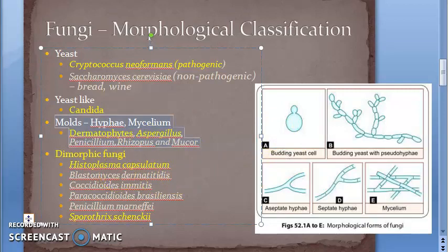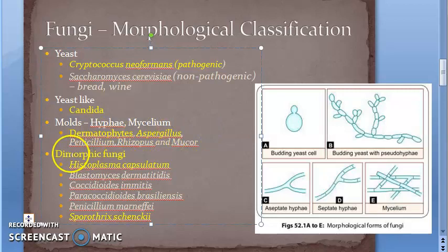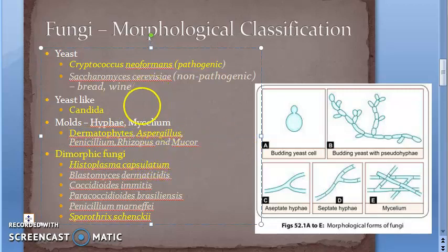Molds reproduce by forming different types of sexual and asexual spores. Important examples of molds include dermatophytes, Aspergillus, Penicillium, Rhizopus, and Mucor. Note that Penicillin is derived from a mold. These highlighted ones are particularly important for the exam, as they cause significant pathologies.